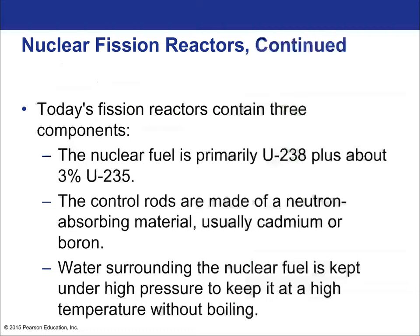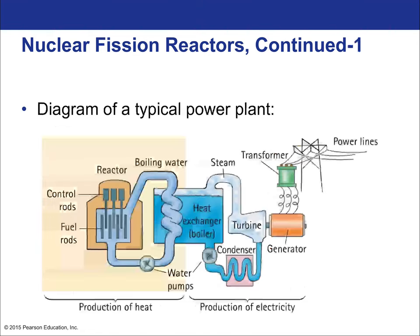Today's fission reactors contain three components: nuclear fuel — primarily uranium-238 with 3% uranium-235 — control rods made of neutron-absorbing material such as cadmium or boron, and water surrounding the nuclear fuel kept under high pressure to remain at high temperature without boiling. The water that contacts the fuel rods is completely closed off from the outside world, with lead shielding between the boiling water and the heat exchanger, so steam rising from cooling towers never contacts the nuclear material.